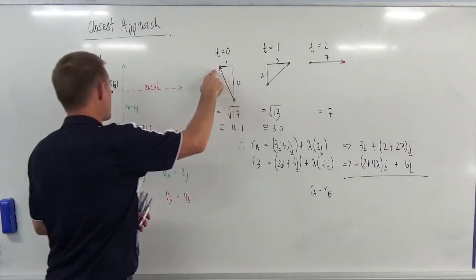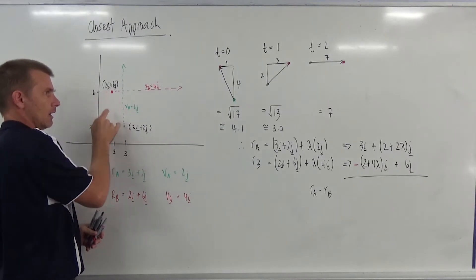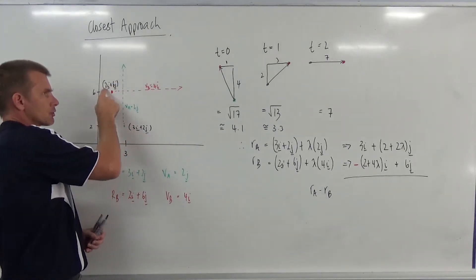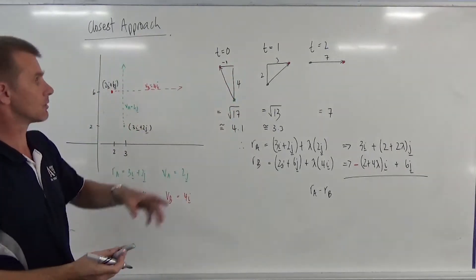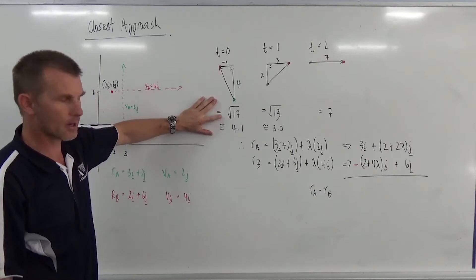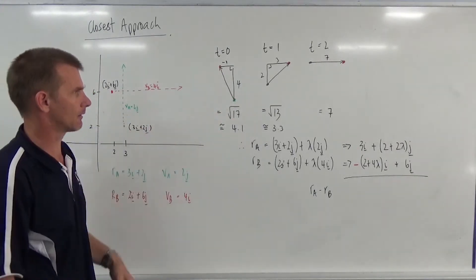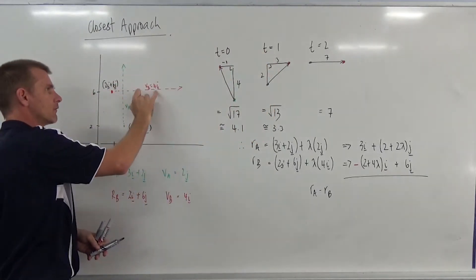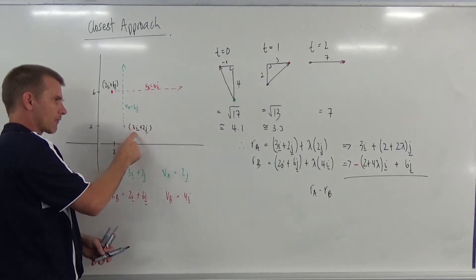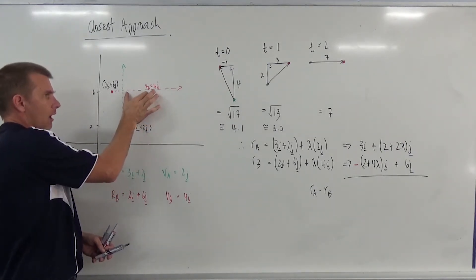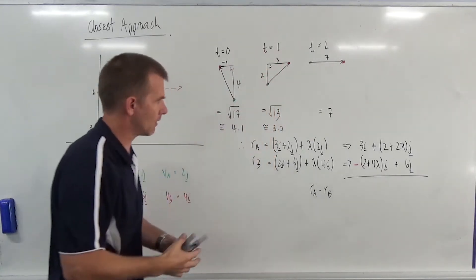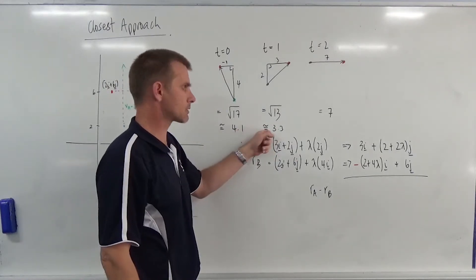Follow the color coding - green and red. At the initial start point, I've worked out the distance: from two to six in one direction and three to two in the other. Being at 90 degrees I can use Pythagoras, coming out at about 4.1. After one second the red particle has moved forward by four, putting it at 6i + 6j, and the green one moves up to 3i + 4j. The distance in i is three, in j is two, giving root 13, about 3.3 - the distance has gone down quite a lot.